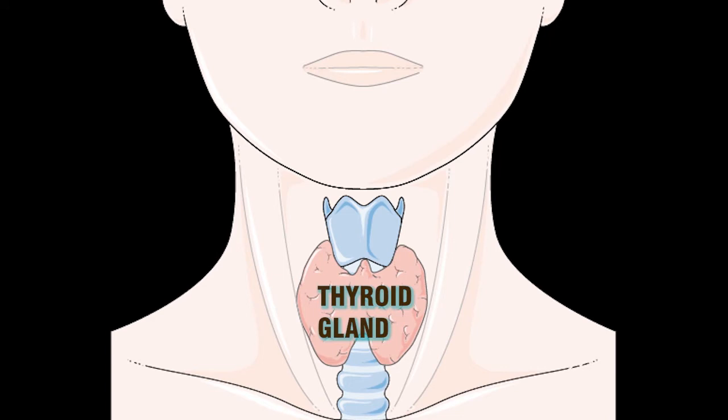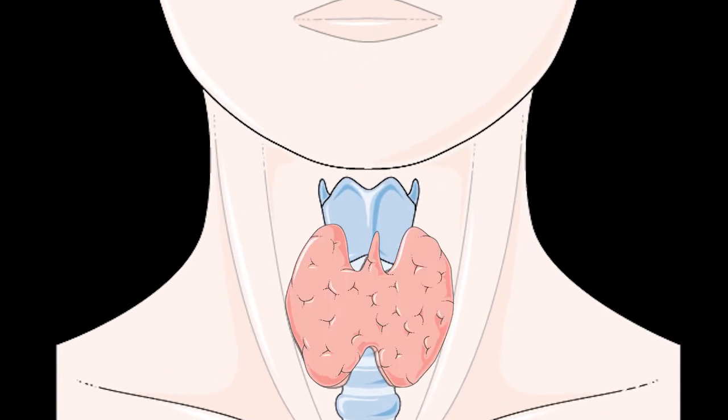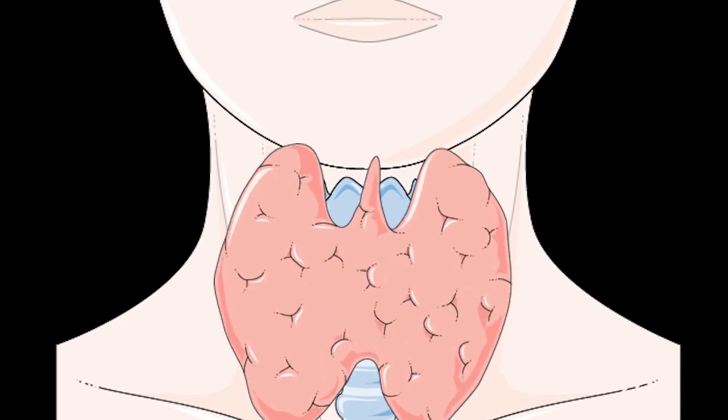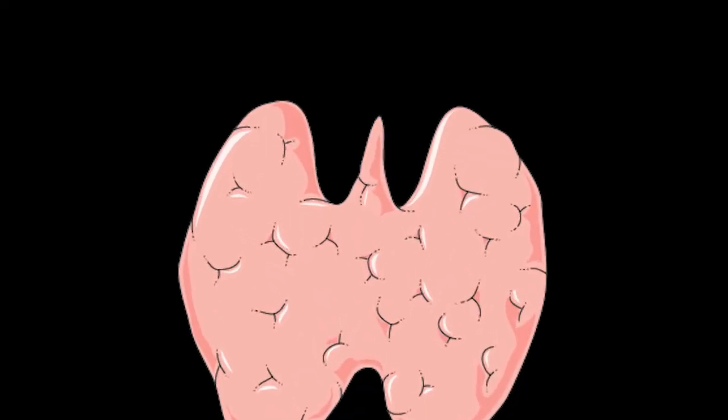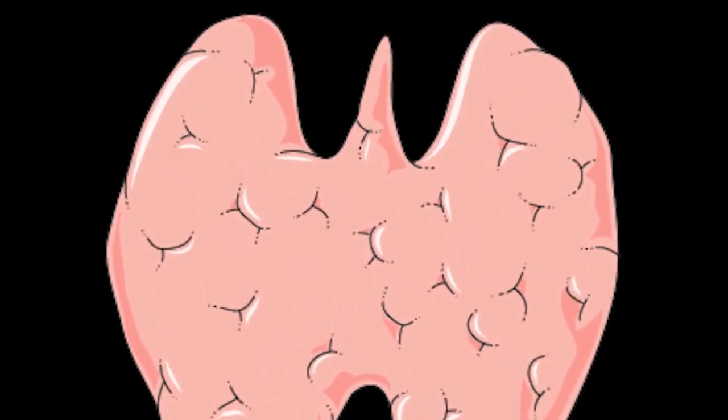Microscopic thyroid follicles make up most of the thyroid gland. The thyroid gland is the only endocrine gland that stores its secretory product in large quantities — normally about a hundred days' supply.